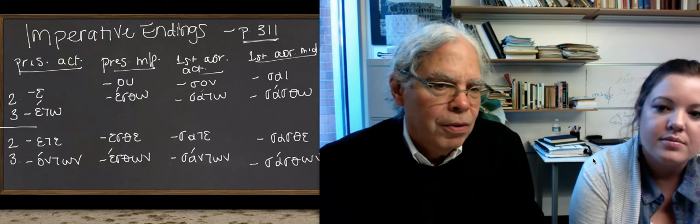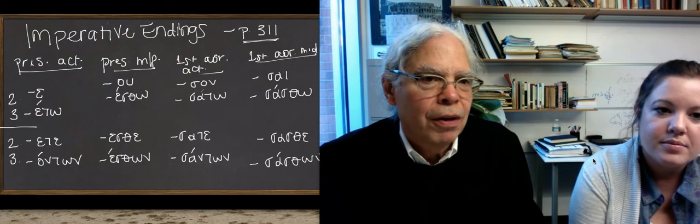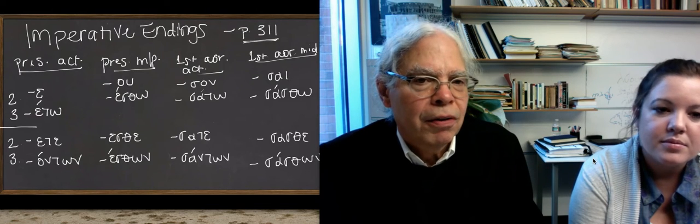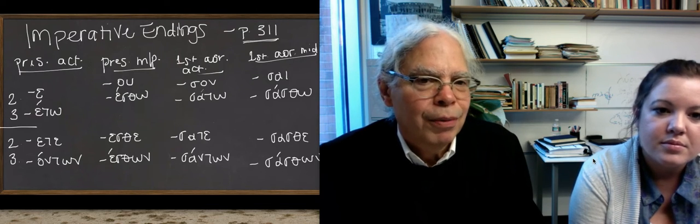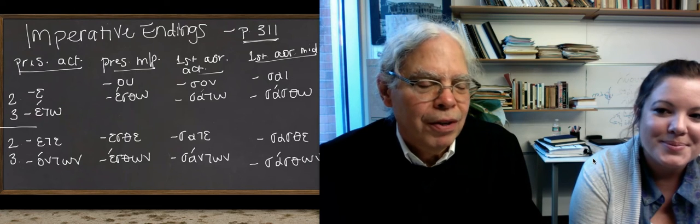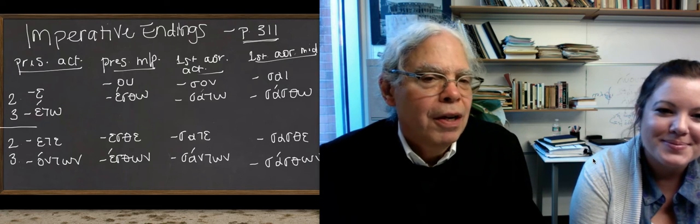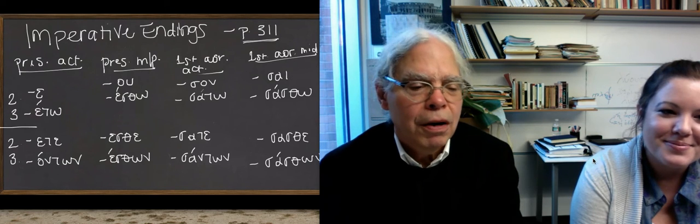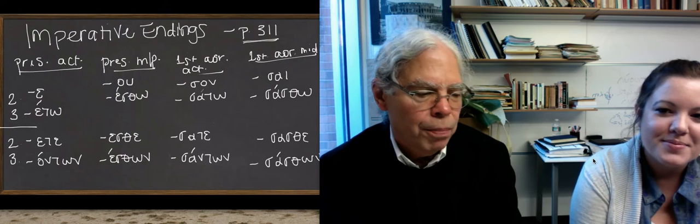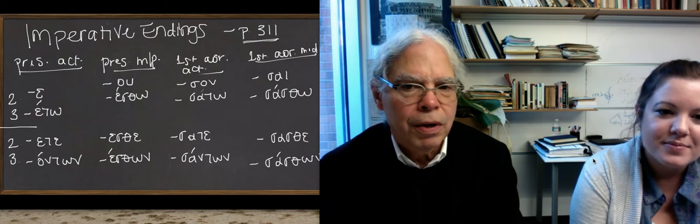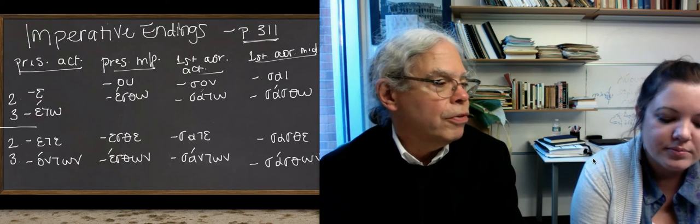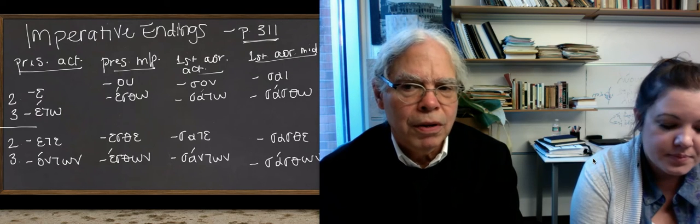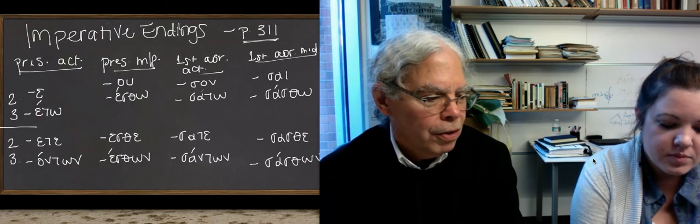What Felicia has put on the iPad for you under imperative endings is from page 311 of the book. We're just missing one column because we've already exposed it enough on that page, which gives you the imperative endings for the present and the aorist. There are no other forms of the imperative in classical Greek than present and aorist imperatives. So the next thing that we can talk about is, well, what's the difference between when to use one and when to use the other.